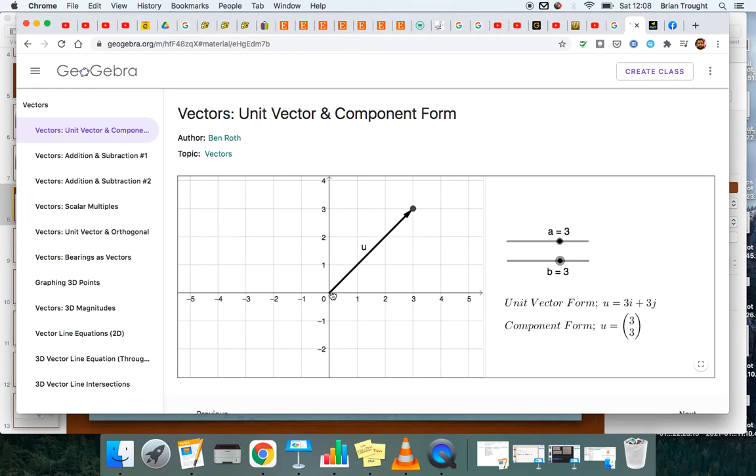First get the angle. So we have 3 over, 3 up. So 3 in the i direction and 3 in the j direction. If we put the j's over the i's, it gives me 1. Get the inverse tan of 1 and that's 45 degrees. So 45 degrees is the angle.